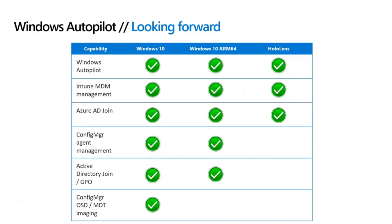Looking at the basic pattern for how devices are provisioned overall: Windows 10 enables everything — Autopilot, Intune management, Azure AD join, Config Manager, AD join, GPOs, imaging with OSD and MDT. With Windows 10 ARM64, Config Manager OSD and MDT drop off — there's no ARM64 support in either. When we move to more modern devices like HoloLens, other things start to drop off like Config Manager and Active Directory. As we see new types of devices, including Windows 10X, expect that the provisioning process will be focused around Autopilot, Intune, and Azure AD join. That is the future — not to say we're ever going to take those legacy options away from Windows 10, but they won't be present in other platforms.